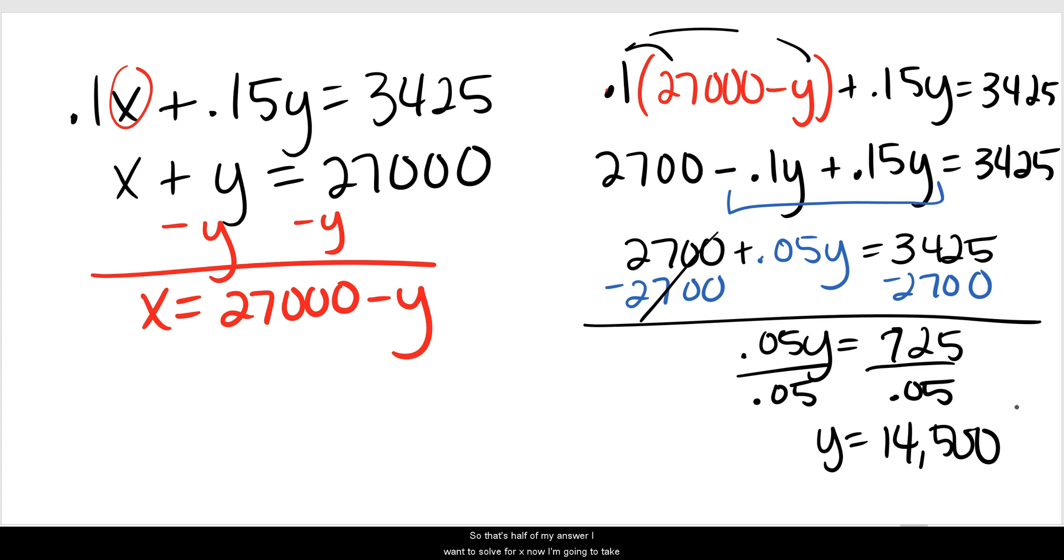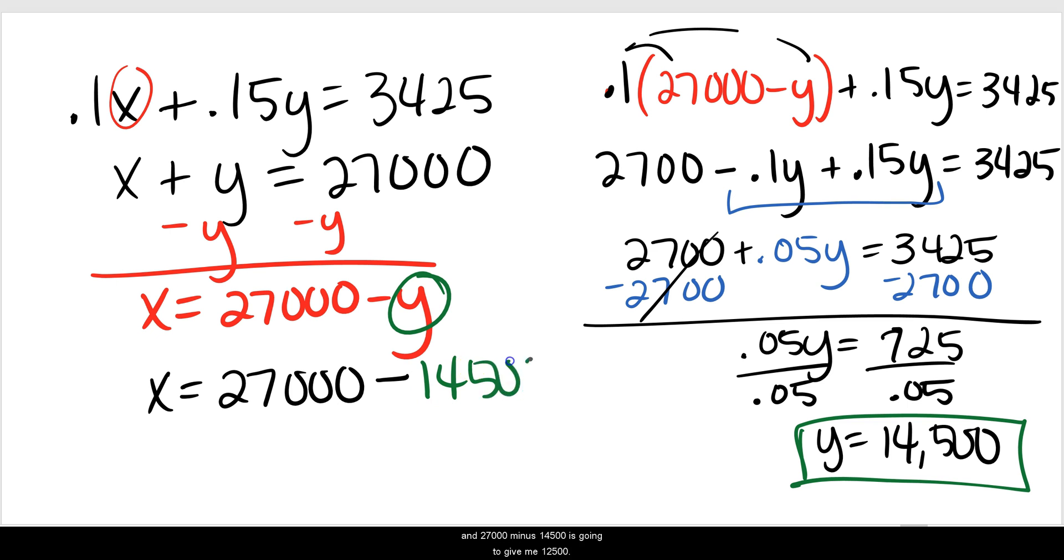So that's half of my answer. I want to solve for X now. So I'm going to take this Y and plug it in for Y into the other equation. So I have X equals 27,000 minus 14,500. And 27,000 minus 14,500 is going to give me 12,500.